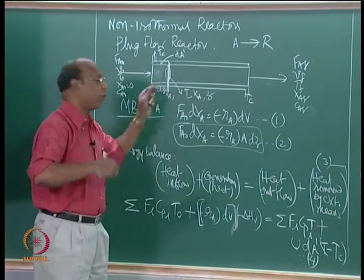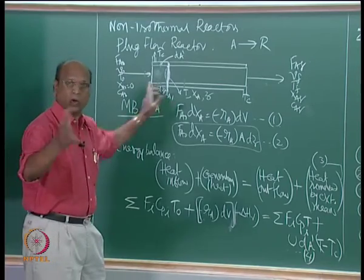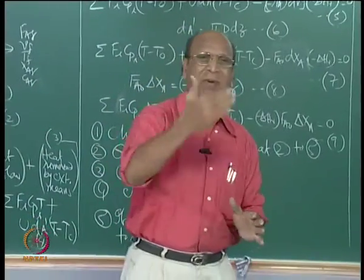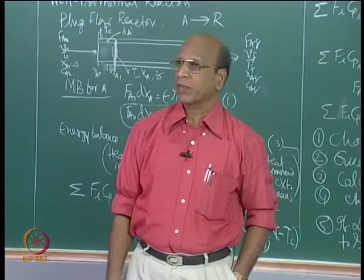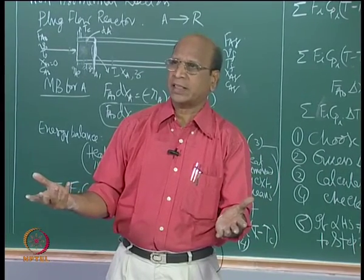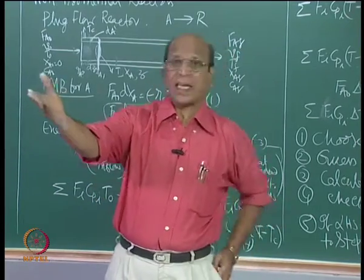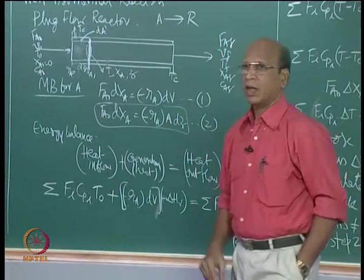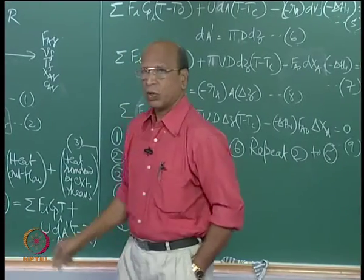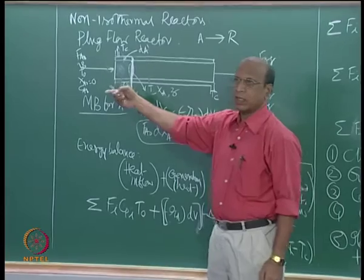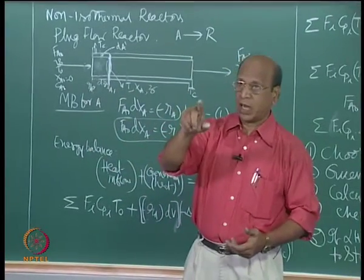The reason we always start from T_0, z = 0, X = 0 is because we know all the initial values. If you take a strip somewhere in the middle, you do not know what T is entering or leaving. That is why we start from the entry point where everything is known. At each new point, once the check is right, I know T, X, and Z. Unless you do one problem yourself, you will not enjoy this.